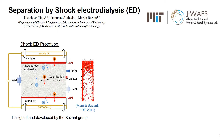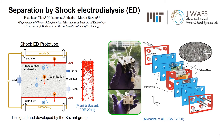Therefore, we can put a splitter at the outlet to separate the phase stream into a brine stream and a fresh stream. This figure shows the real shock ED device that we made in our lab. This frit is a macroporous material and has dimensions of centimeters.